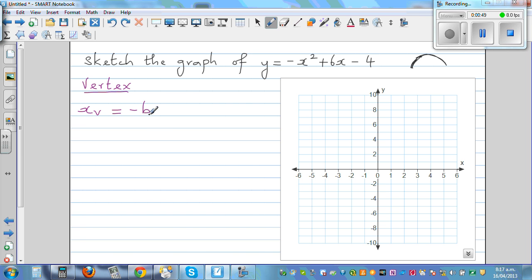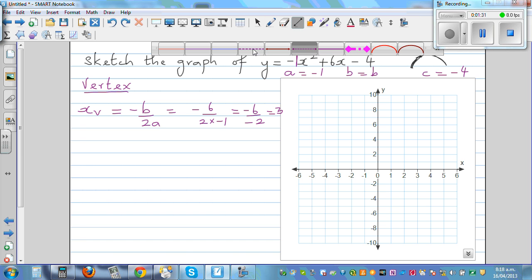It's a good habit to write what is a, what is b, and what is c. a is the coefficient of x squared, so a is negative 1. Your b is the coefficient of x, which is 6. And c is the constant, which is negative 4. So negative b would be negative 6 over 2 times negative 1, which is negative 6 divided by negative 2, which is 3. So the line of symmetry is passing through 3.